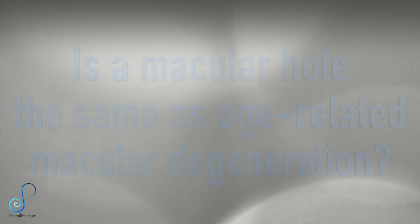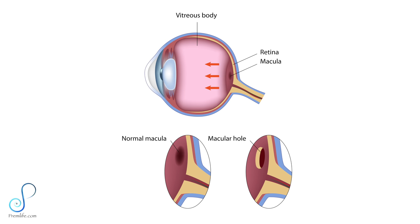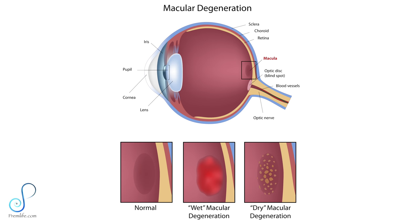Is a macular hole the same as age-related macular degeneration? No. Macular holes and age-related macular degeneration are two different and distinct conditions. Macular degeneration is a condition that affects the tissues under the retina, while a macular hole involves damage at the junction between the vitreous and the retina itself. No relationship exists between the two diseases, although they have similar symptoms.